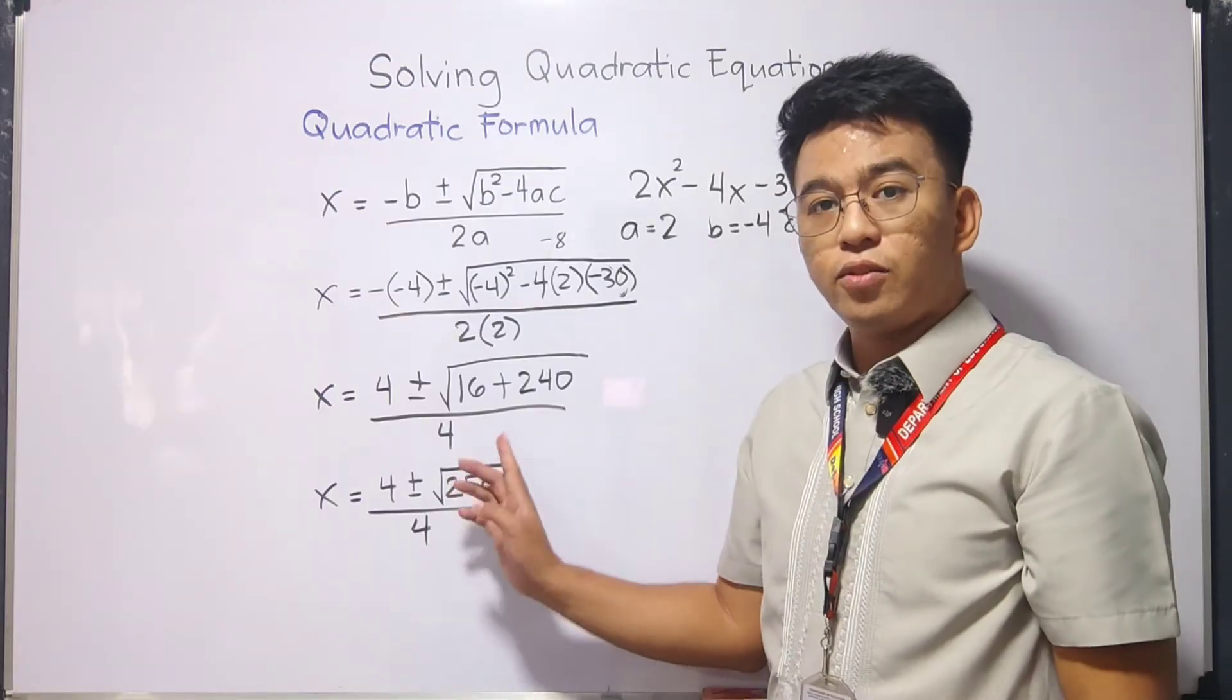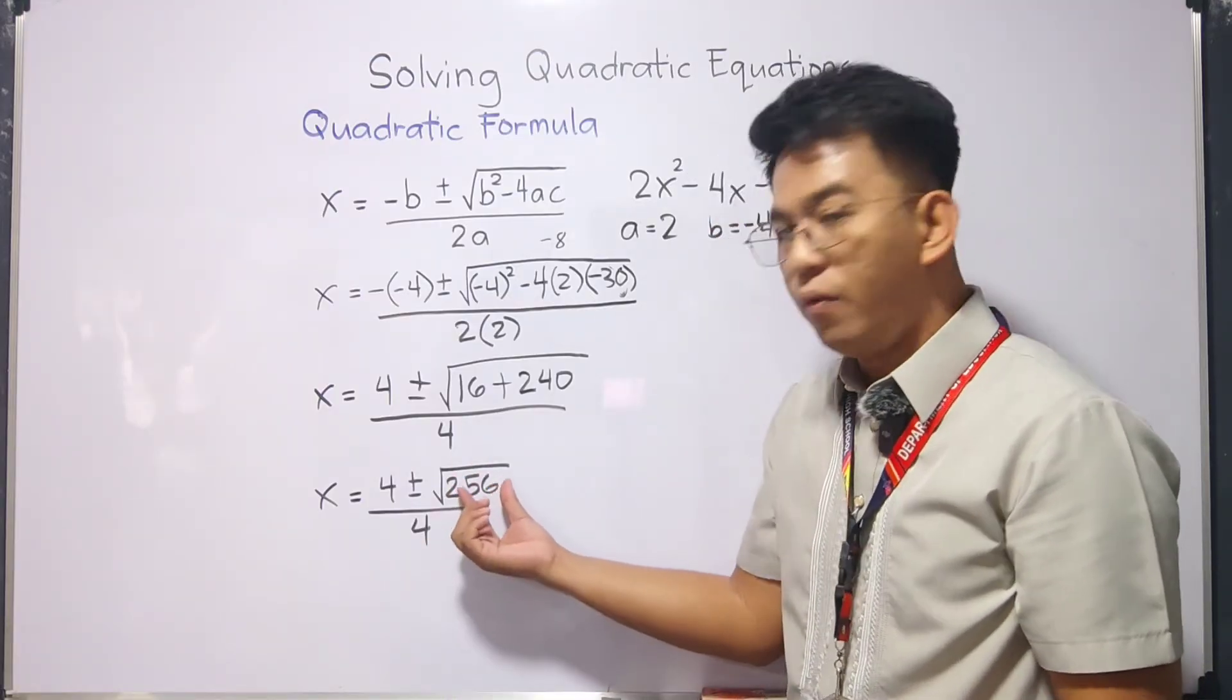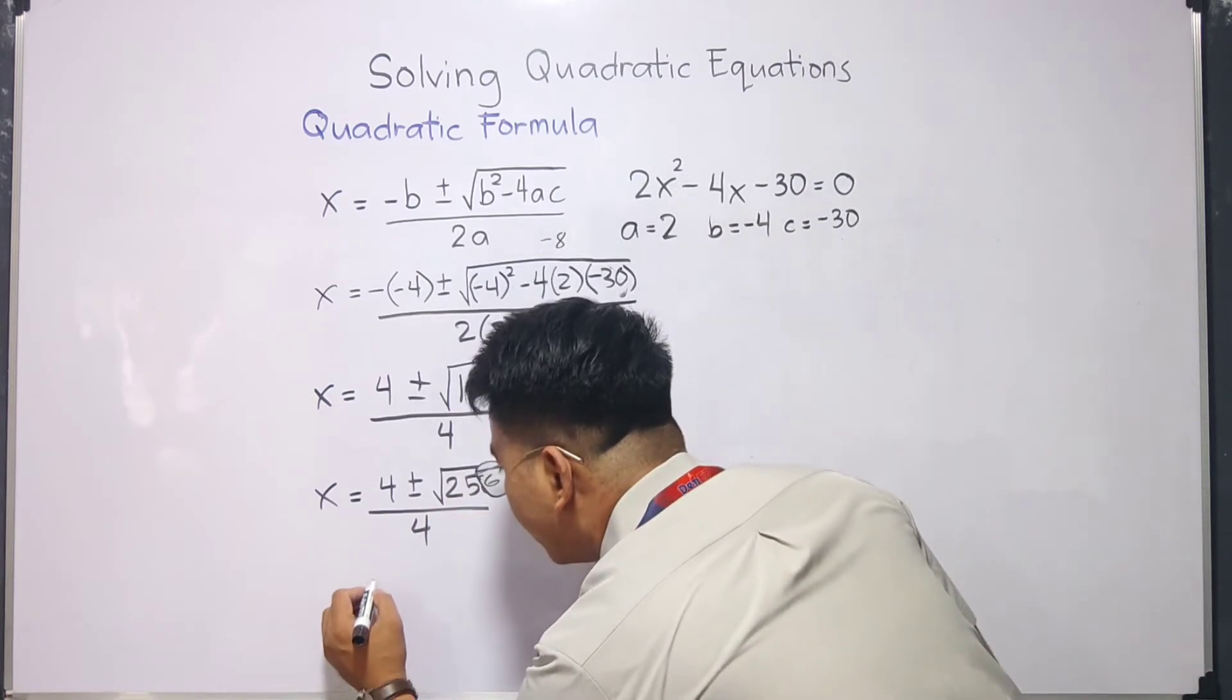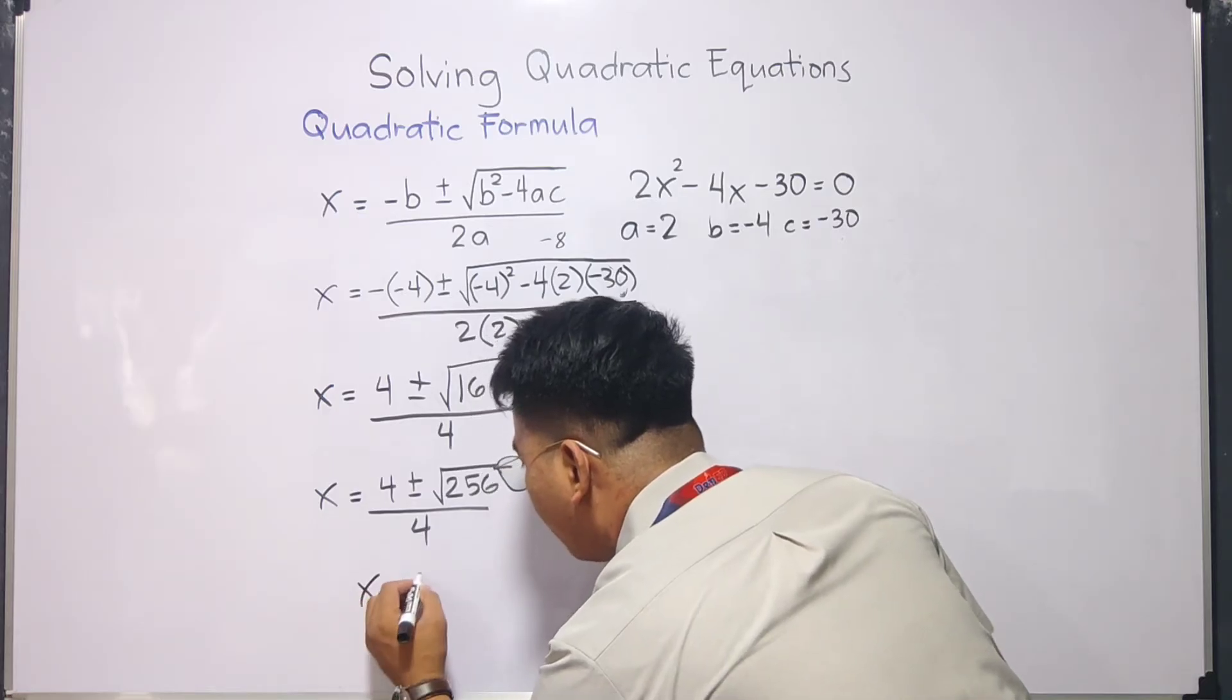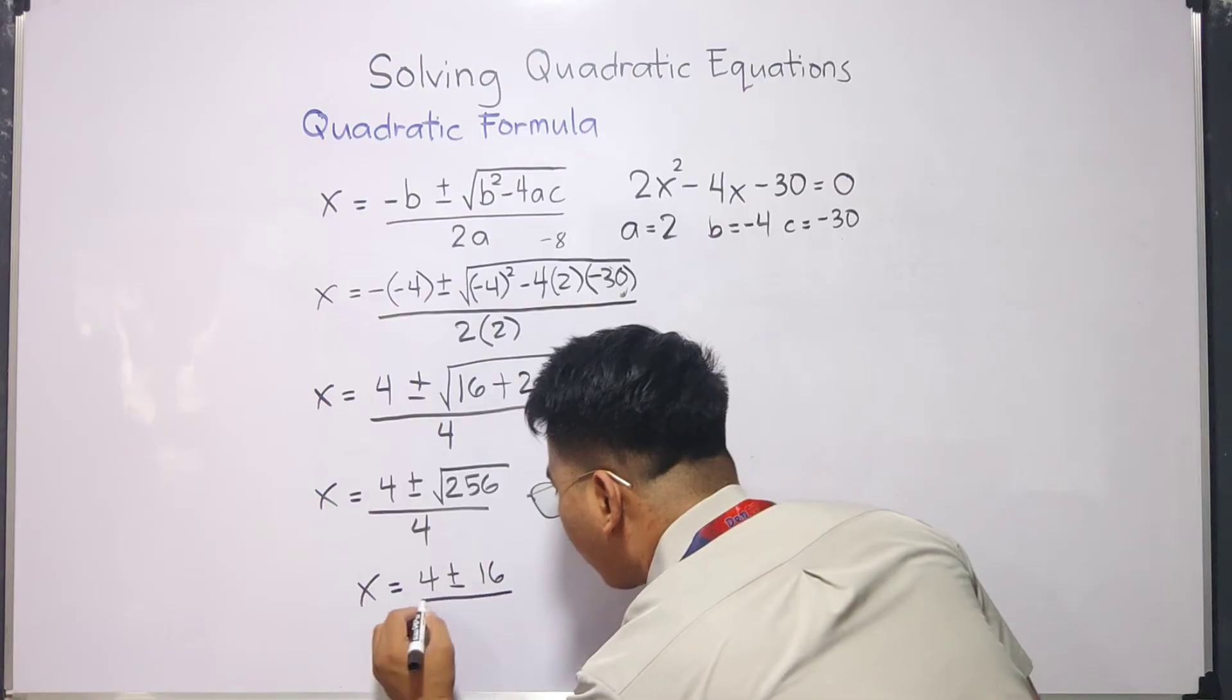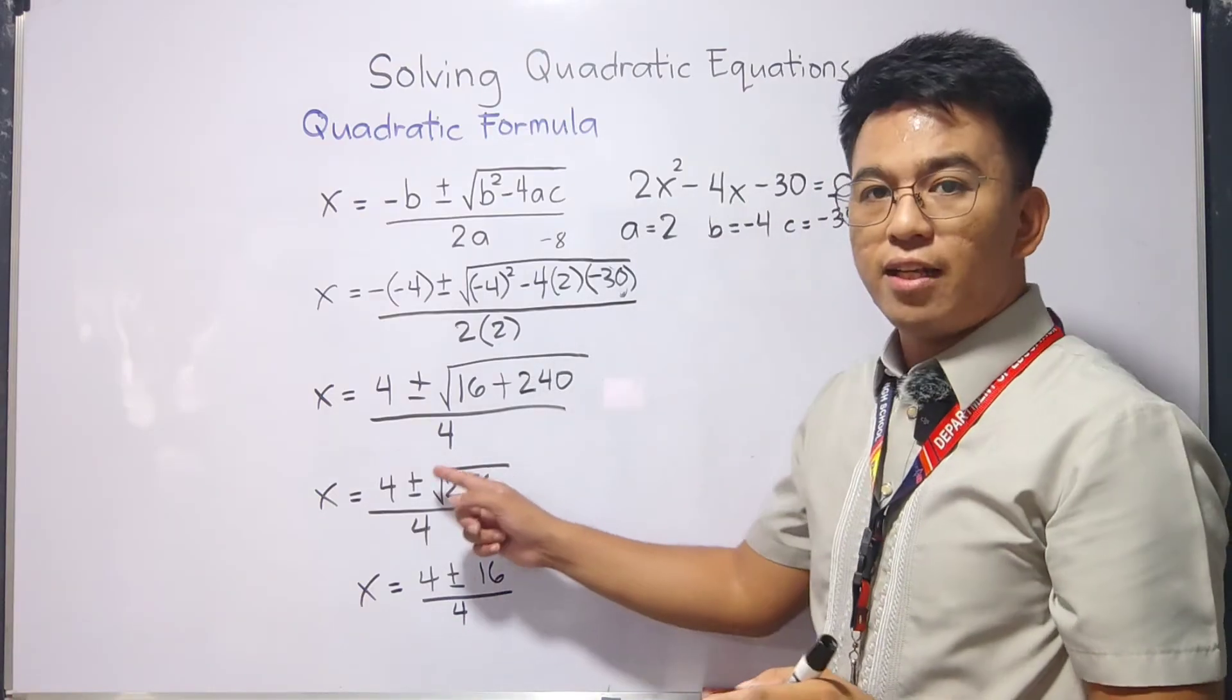And this square root of 256, this number is a perfect square. We can extract it. The square root of 256 is 16. So what we have here is, x is equal to 4 positive negative 16 over 4.